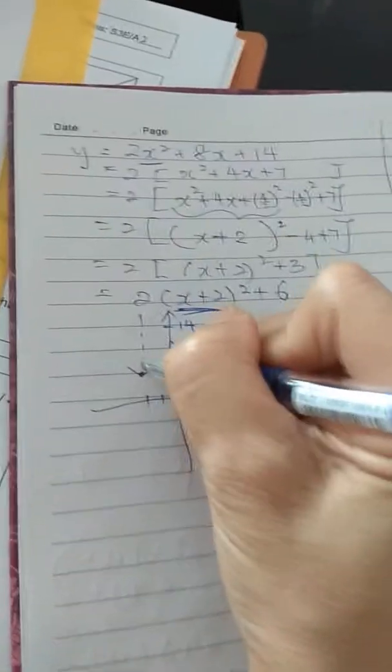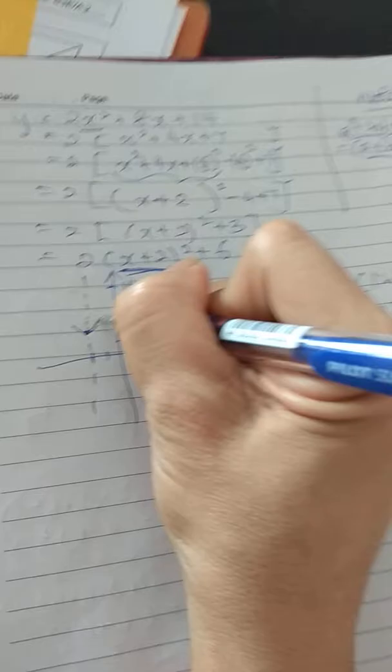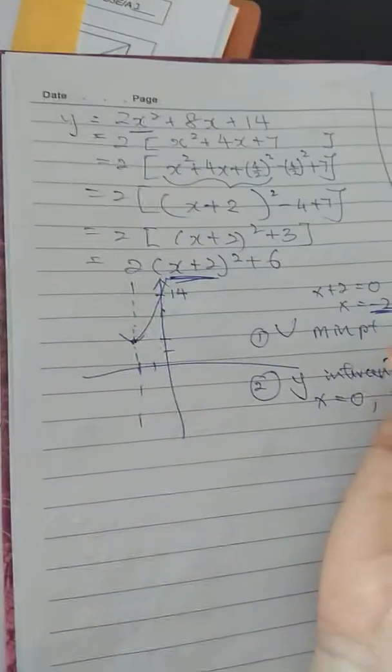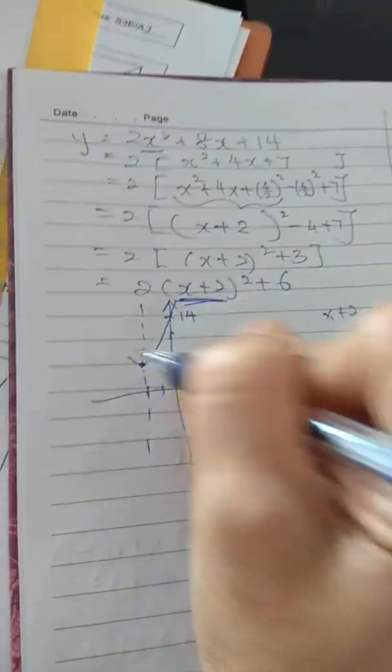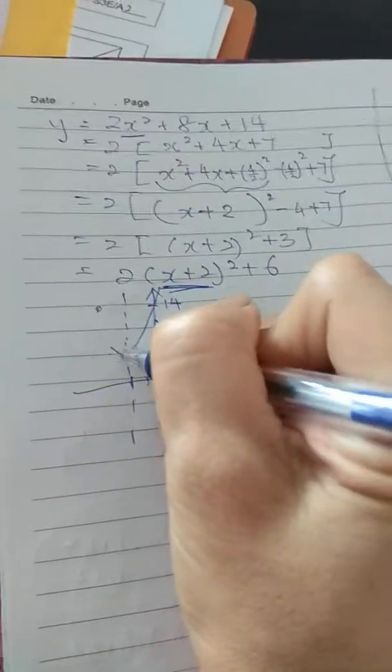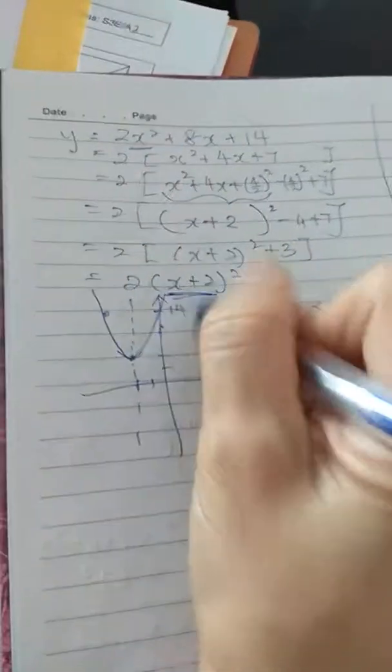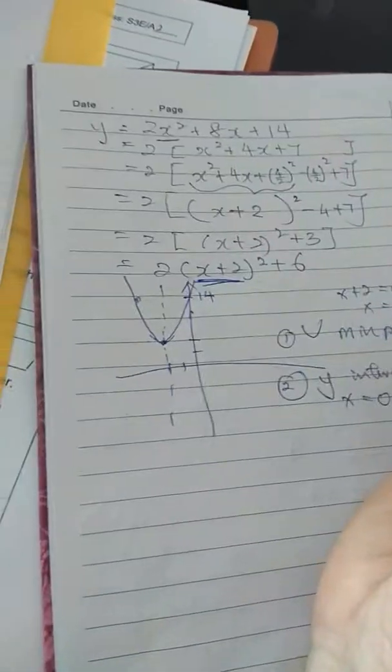Because I know that this is the line of symmetry. So from here you join to here. From here to here is 2, so you mark another point 2 units away here, so that your graph will look symmetrical.